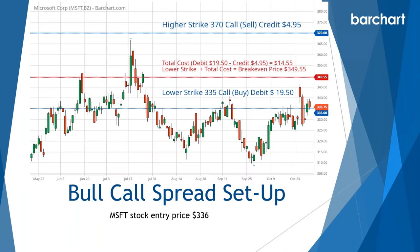Here's a bull call trade set up on October 31st for Microsoft. We purchase the lower strike, the $335 call, at a cost of $19.50. At the same time, we sell the higher strike call, the $370 call, and collect $4.95. Our total cost — the debit paid out minus the credit taken in — is $14.55. That is our maximum loss risk; we cannot lose more than that amount.